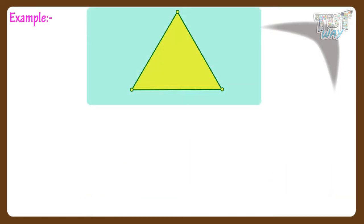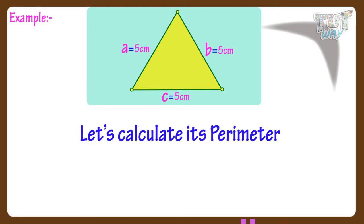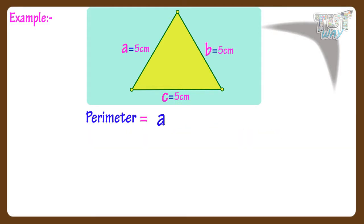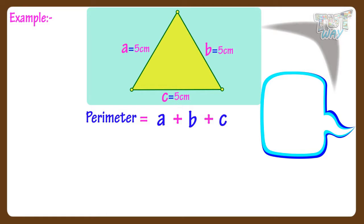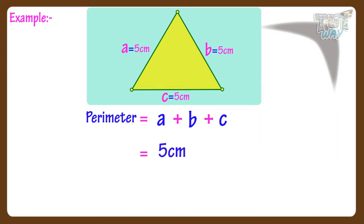Let's take an example. Here we have a triangle with the lengths of its sides mentioned. Now let's calculate its perimeter. We know perimeter is equal to A plus B plus C, where A, B and C are lengths of sides of the triangle. Here A, B and C all equal 5 — that is, all sides measure 5 centimeters. So perimeter is equal to 5 plus 5 plus 5, which equals 15 centimeters.